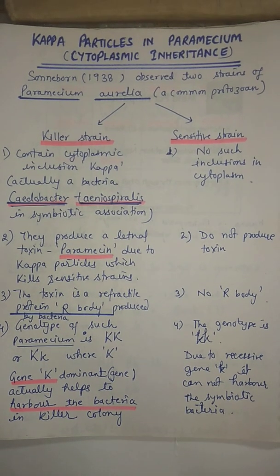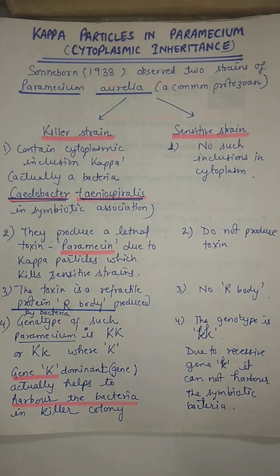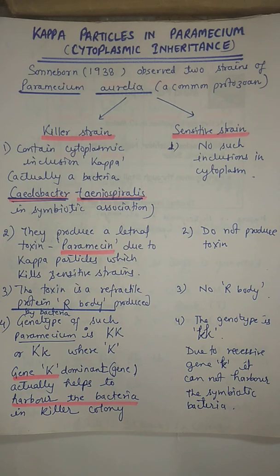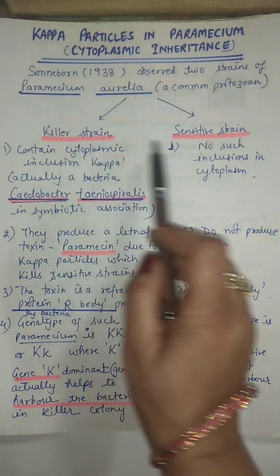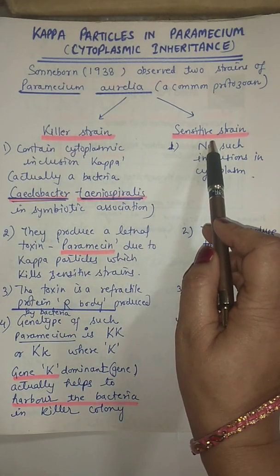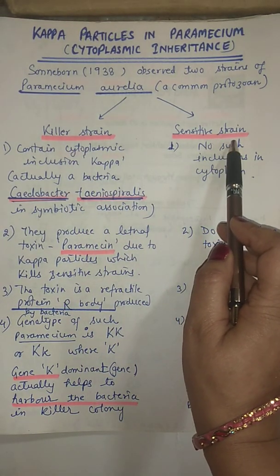Sonborn, 1938 observed two strains of Paramecium aurelia, a common protozoan. He observed in a colony that few paramecium die away while only few can survive. The survivors he called the killer strains, and those which die away he called the sensitive strain.